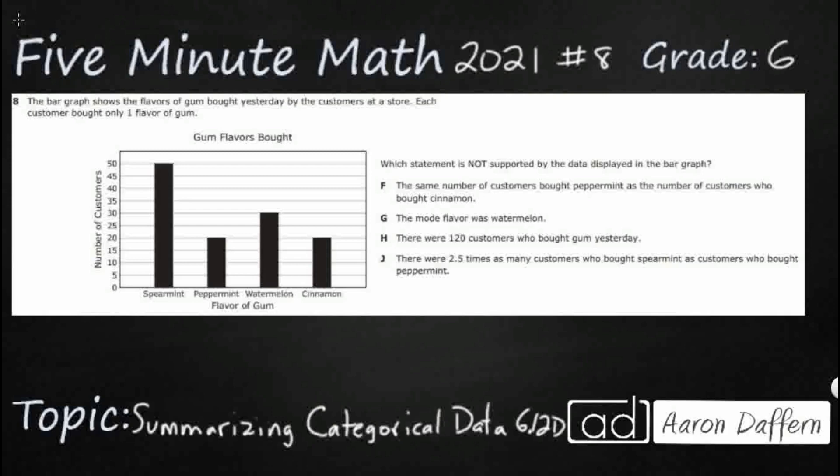So we have a simple bar graph here, and one thing we need to keep in mind is we've got the number of customers here in our bar graph, that is our y-axis right here, but each customer only bought one flavor of gum.